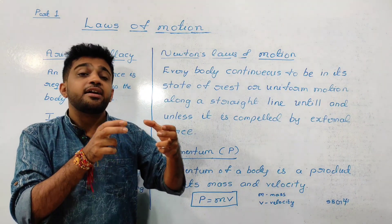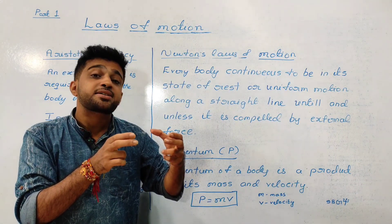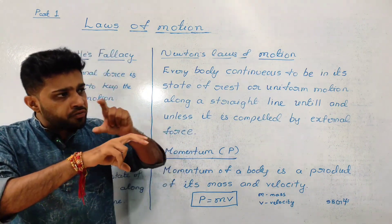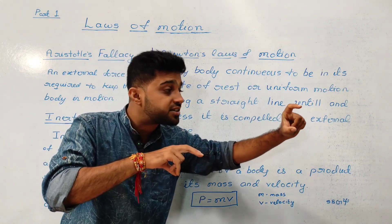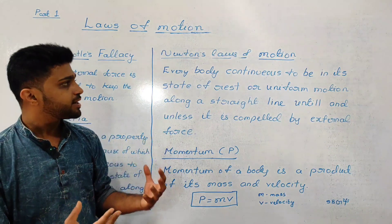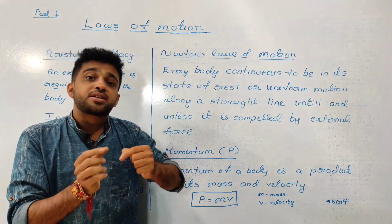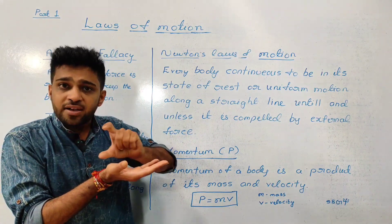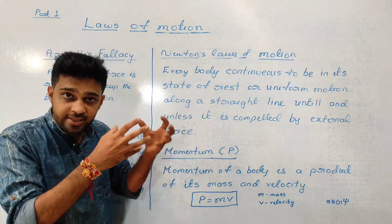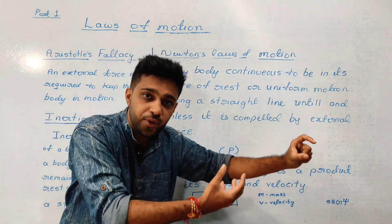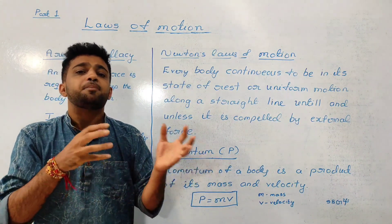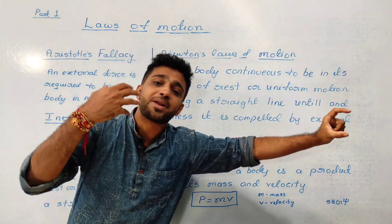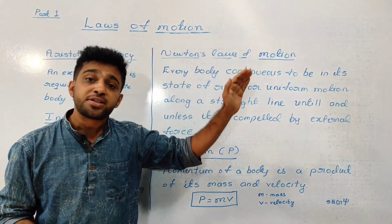This law means that if no external force is applied to an object, it stays at rest or continues moving at the same speed. External force is needed to change the state of rest or motion. If an object is already moving, its velocity decreases only when external force is applied. This is the first law of motion, also called Newton's law of inertia.